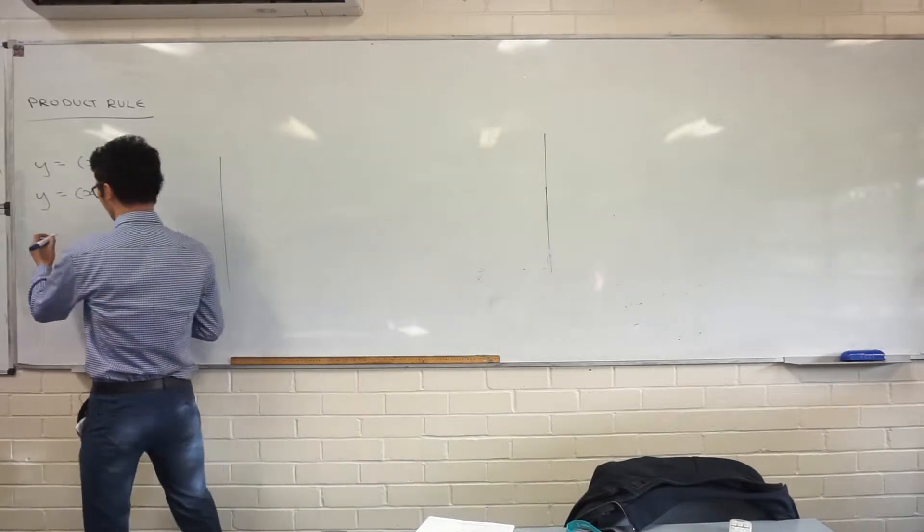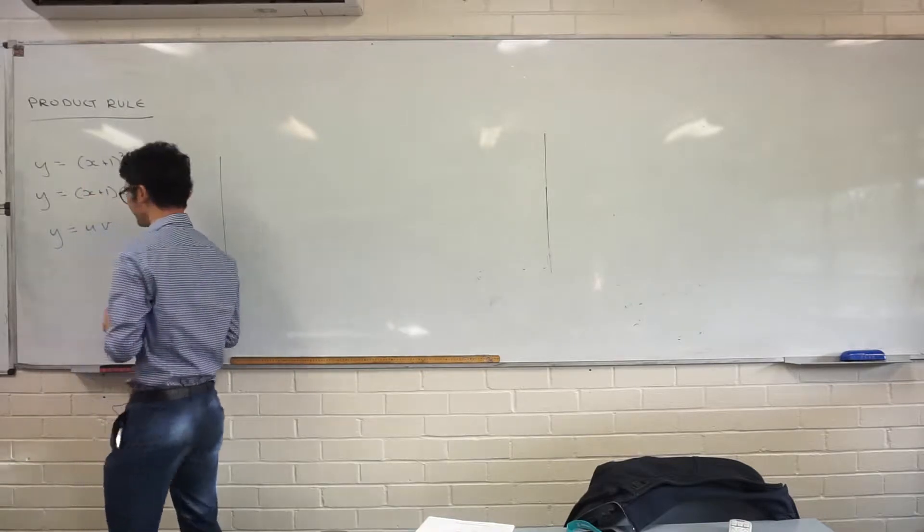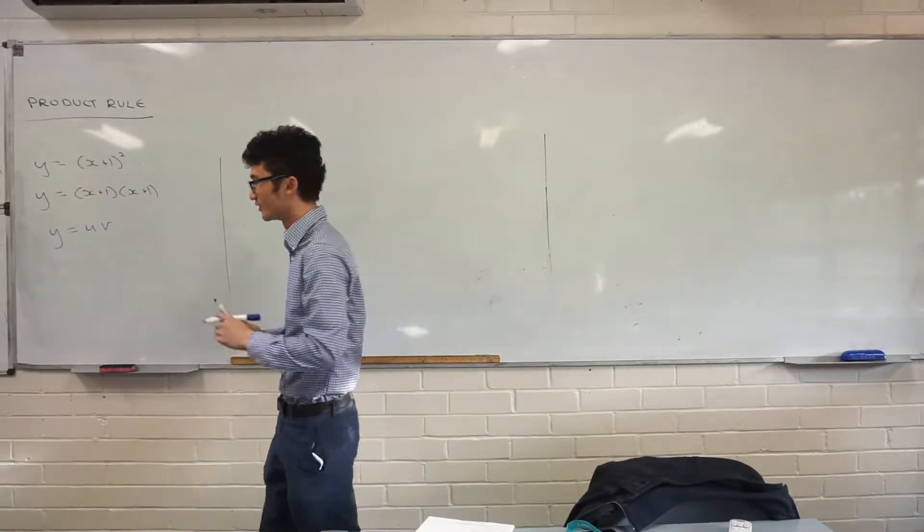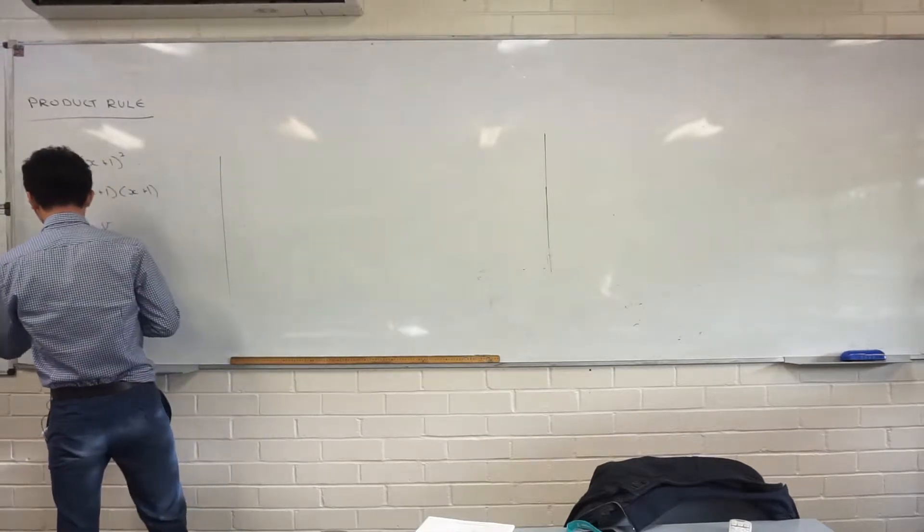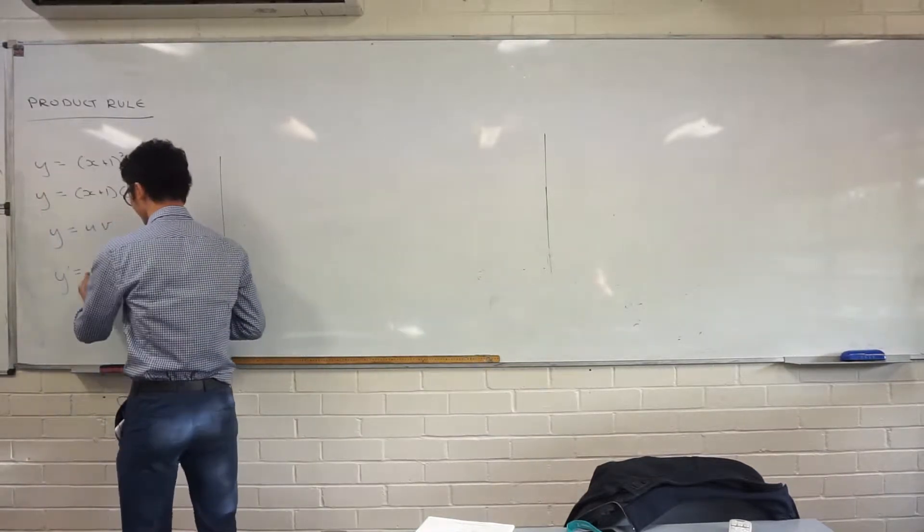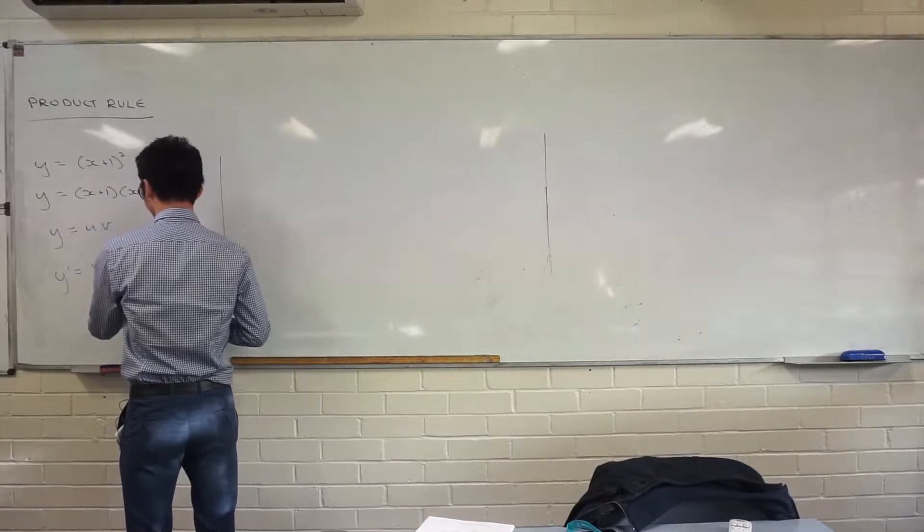And the product rule allows you to differentiate two functions. If you have the function that looks like this, y equals uv, so u times v, we can find the derivative y dash by using this formula: vu dash plus uv dash. Can you write that down for me?